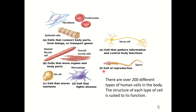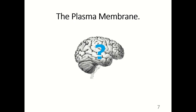Figure F shows the male cell of reproduction, called the sperm. The female reproductive cell is the egg. Let's go through the different parts of the human eukaryotic cell, starting with the plasma membrane.